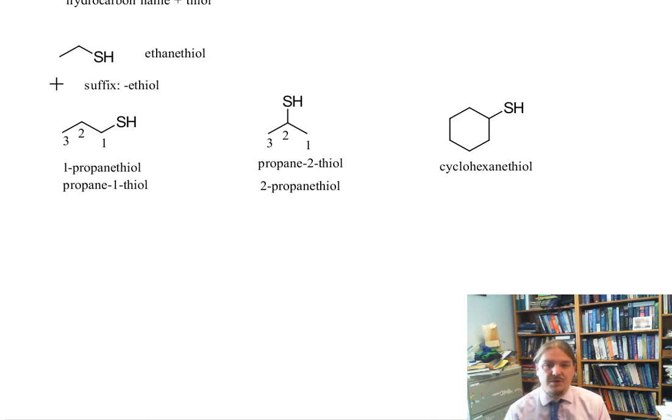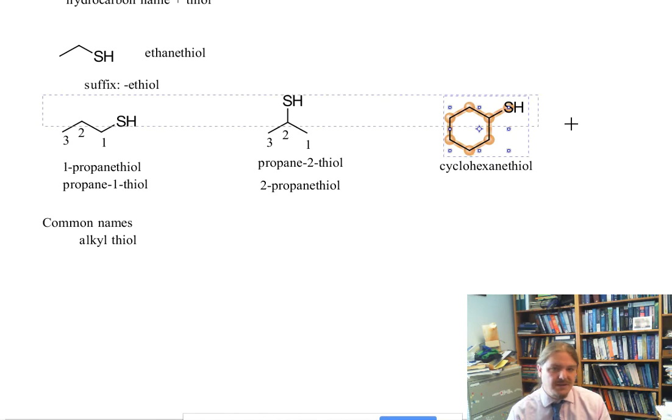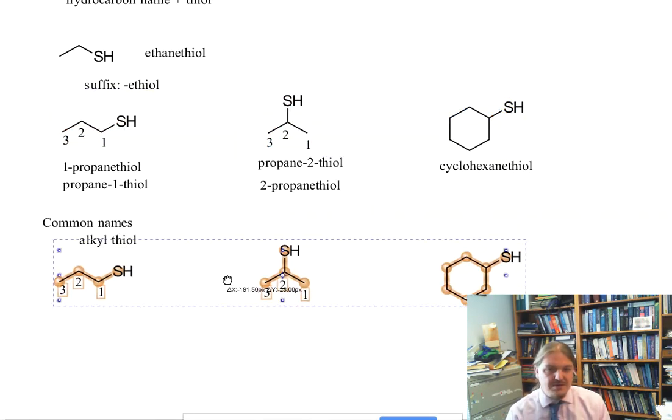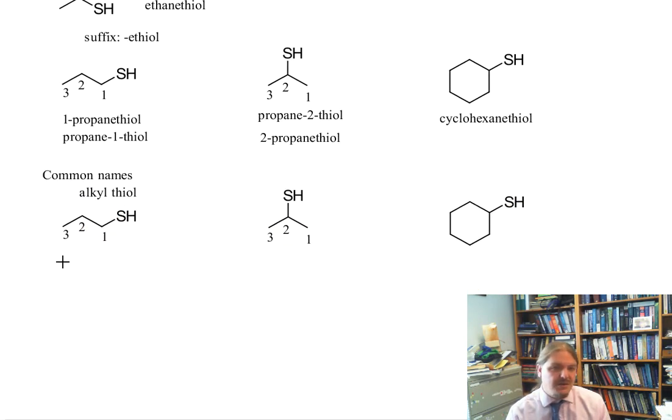Very briefly, I want to go over some common names for thiols. One common name strategy is to start with alkyl thiol. This mirrors some of the common names for alcohols, like ethyl alcohol, tert-butyl alcohol, and so on. Our three thiols, using this naming system, cover the propyl thiol. This one is actually an isopropyl group, so this is isopropyl thiol. And then the last one is cyclohexyl thiol.